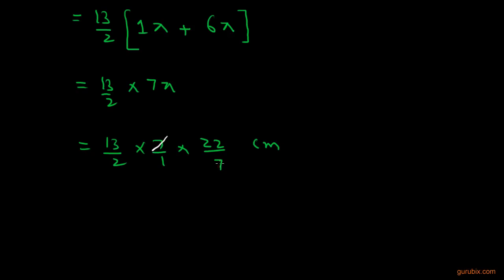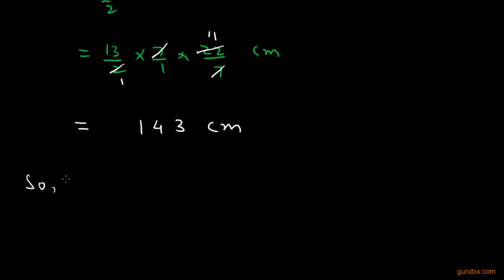Now, we can cancel out this 7 with this 7, 2 with this 22, and this is equal to 143 centimeter. So, the total length of spiral equals to 143 centimeter.